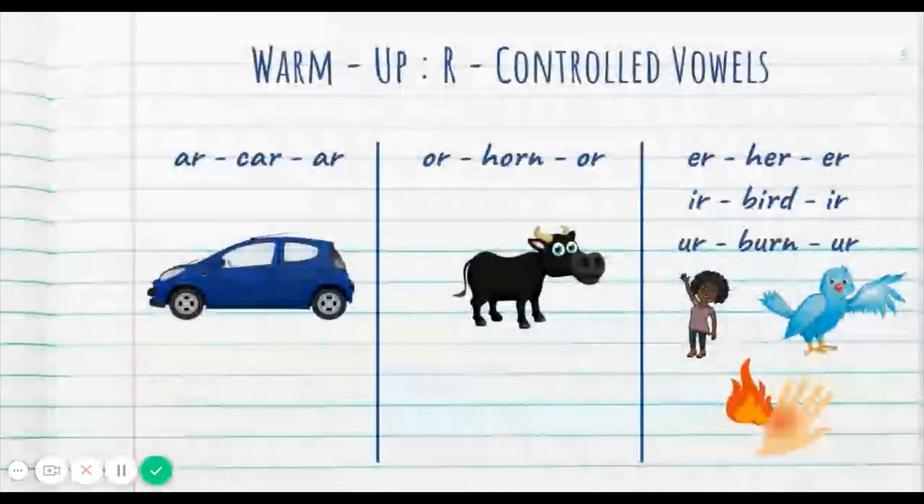So repeat after me. AR, CAR, R. Go. Pretty good. All right, moving on to the next one. O-R, HORN, OR. Go. All right, not bad. Now this last column, you might be looking, you might be saying, what in the world, Ms. Howard and Bridget? But it's really quite simple. All three of these R controlled vowels make the same sound. ER, ER, and you guessed it, ER.